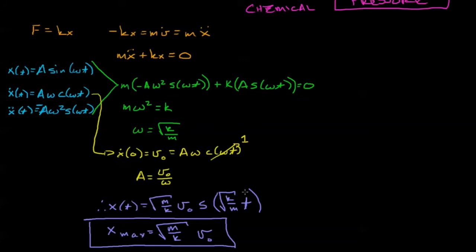Then we used our initial conditions to identify what the coefficients were here. And then I took a shortcut here where I realized that this value, at its maximum, is going to be 1, which would leave the maximum position, the maximum compression, square root of m over k, v0.